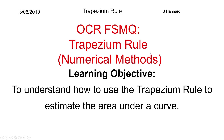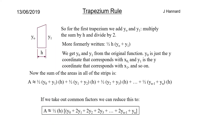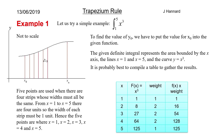That is the trapezium rule — a little confusing at first, but essentially you want to learn the formula, do a few examples, and use the table method: list your x-values, compute your y-values, apply the coefficients (1, 2, 2, …, 2, 1), multiply, sum them up, then multiply by ½ and by H. H is 1 here because our x-values go up in steps of one — from 1 to 2, 2 to 3, 3 to 4, 4 to 5.